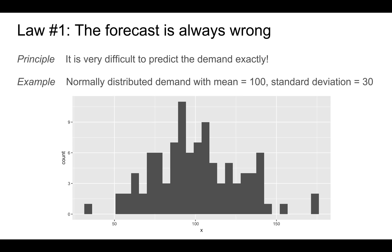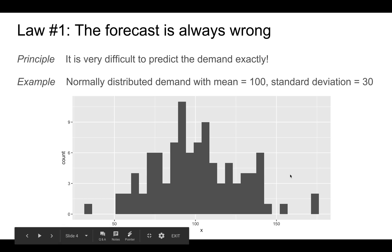Let's look at the first law first. The principle is that it is very difficult to predict the demand exactly because of randomness in demand. For example, if demand were normally distributed with a mean of 100 and a standard deviation of 30, and you observe 100 realizations of demand as shown in the figure below, you'll see that very rarely is the demand equal exactly to 100. There's a lot of variability — sometimes you see low demand, sometimes you see high demand.